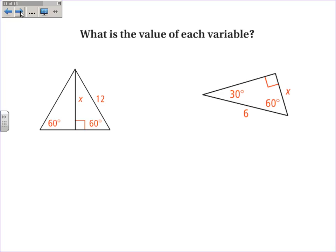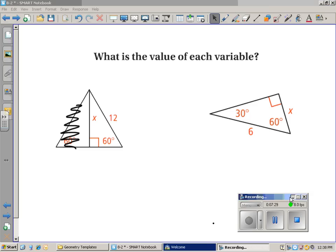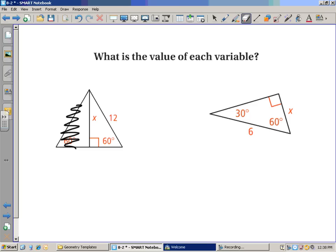A couple of examples. If the hypotenuse is 12, the shortest side must be half of that, or 6. The longer leg is the shorter leg times root 3, so x must equal 6 root 3. In this one, the hypotenuse is 6, so the shorter leg is half of 6, meaning x equals 3. And by the way, the longer leg would be 3 root 3.